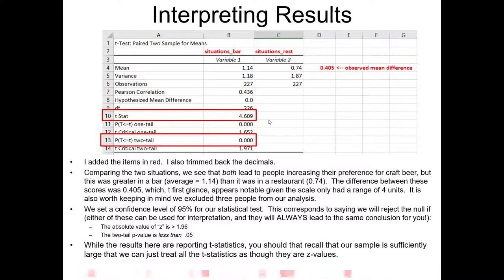And there is indeed a statistically significant difference between these two groups. We do believe people have a greater preference for craft beer at a bar than they'd have for craft beer at a restaurant. We could also use the p-value approach here where the p-value is clearly less than 0.05 to come to the same conclusion that we would reject the null hypothesis.